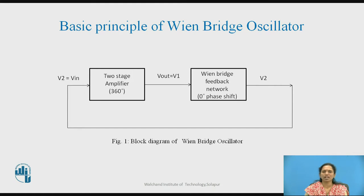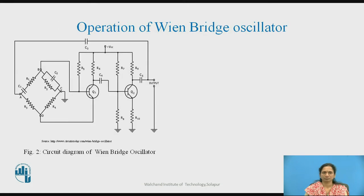This is the basic block diagram of the Wien Bridge Oscillator circuit, where the total phase shift is obtained through the two stages of the amplifier and the bridge circuit is used to stabilize the output. Figure 2 shows the circuit diagram for the Wien Bridge Oscillator circuit.